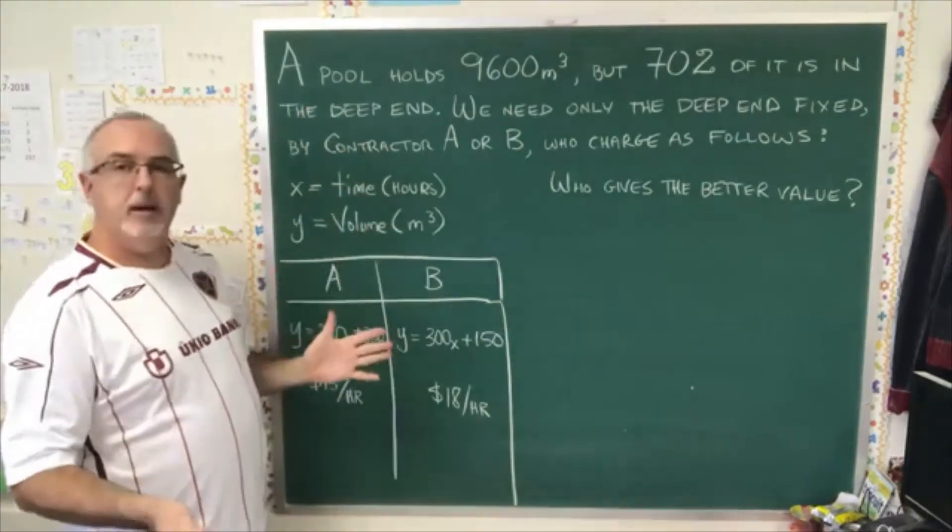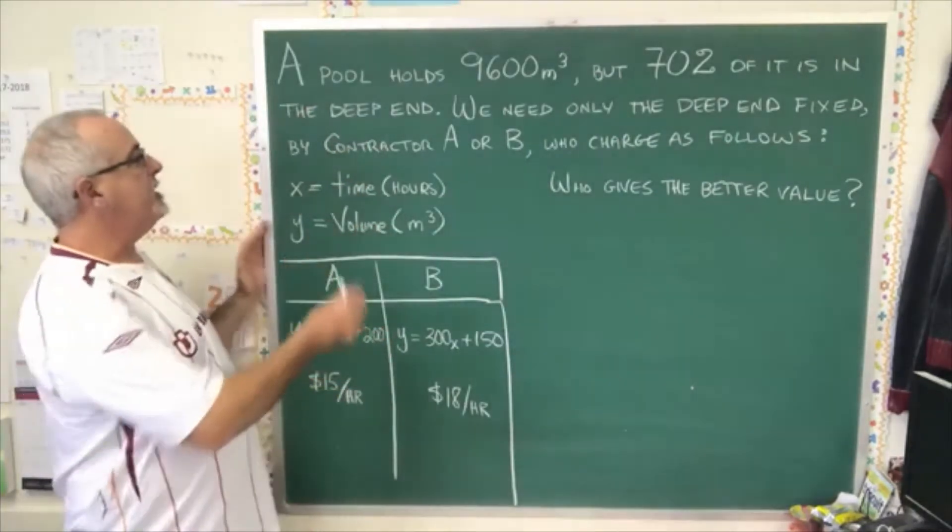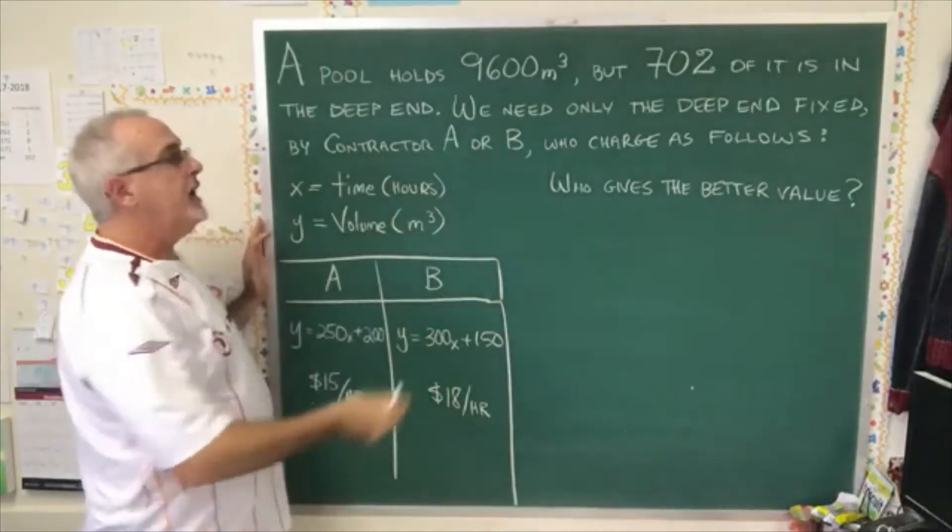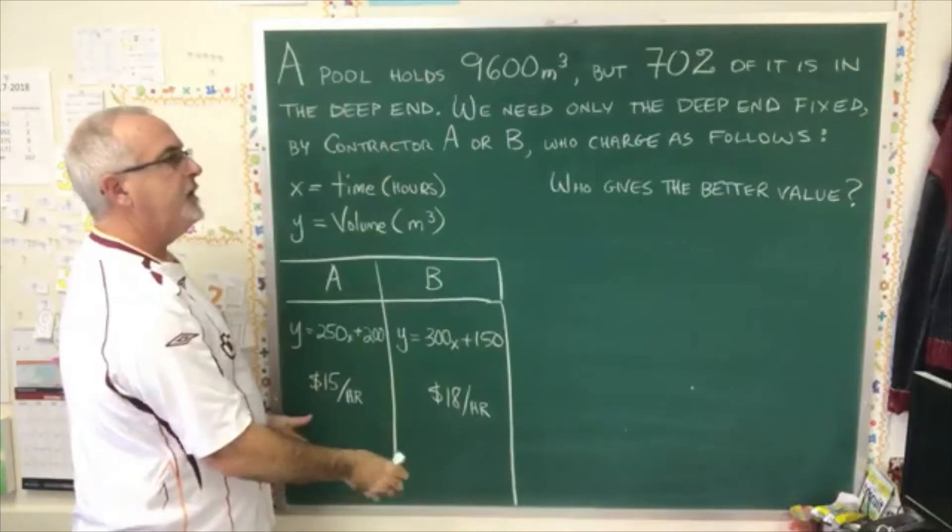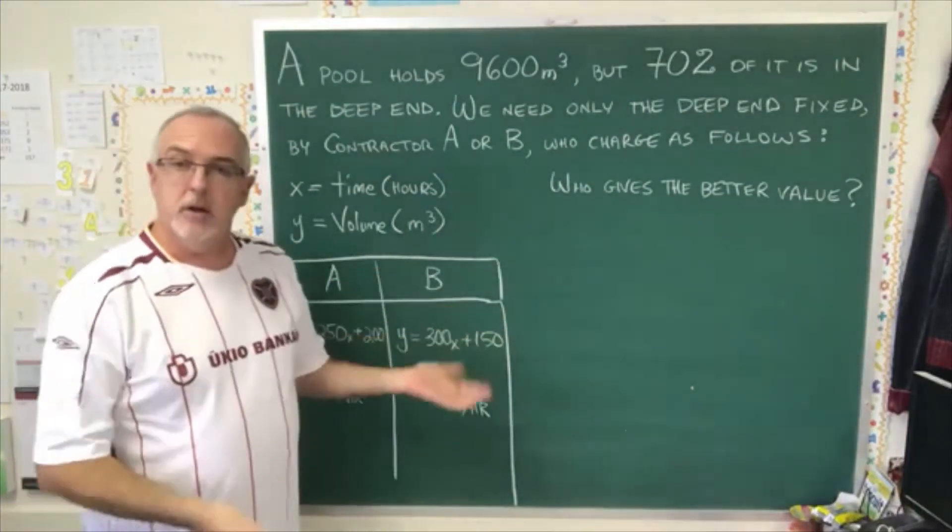We need only the deep end fixed, and we're going to get that done by either contractor A or contractor B, and what they charge is explained here. Who gives the better value? Which contractor should we choose?